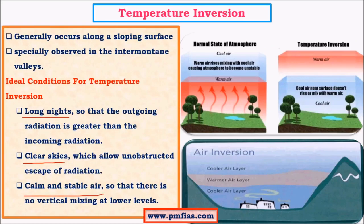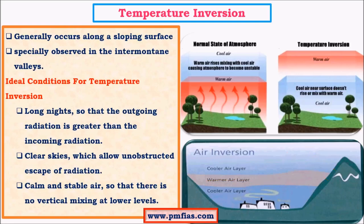For temperature inversion to occur, we usually need greater heat loss than heat gained, and this needs to be a constant process over a long period of time. Long nights mainly facilitate Earth's terrestrial radiation, so heat loss is greater, which aids temperature inversion. Clear skies don't interrupt this radiation loss, enhancing heat loss further. We also need calm and stable air so that these layers don't get mixed — there is no disturbance and the layers remain constant for a very long time, giving rise to temperature inversion.